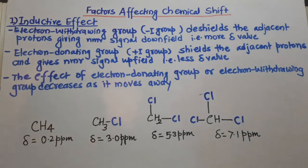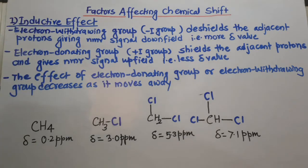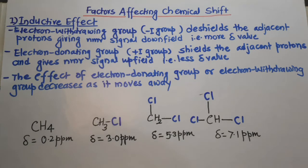Factors affecting chemical shift. We know the meaning of chemical shift — it refers to where the proton is actually showing its signal in NMR spectroscopy. The position of the NMR signal is affected by other factors, and we are going to discuss which factors affect the position of the NMR signal in this video.